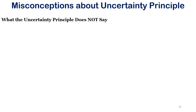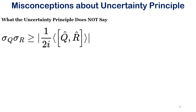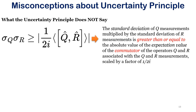Now what the uncertainty principle does not say: the generalized uncertainty principle states that the standard deviation of Q measurements multiplied by the standard deviation of R measurements is greater than or equal to the absolute value of the expectation value of the commutator of operators Q and R, scaled by a factor of 1/2i. This is a more generalized uncertainty principle, and there are a few important things we need to take care of in this statement.